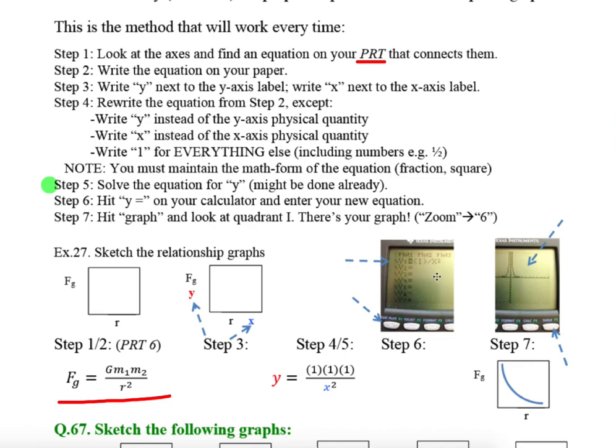All you do is pop out your calculator. You hit Y equals, you enter your equation. If you notice where I wrote it, I know 1 times 1 times 1 is just 1, so I wrote 1 divide X squared. And then you hit graph. Now the majority of our graphs are in quadrant 1, so make sure you are zoomed standard so you can see a decent amount of the screen. And look at quadrant 1, there is your answer.